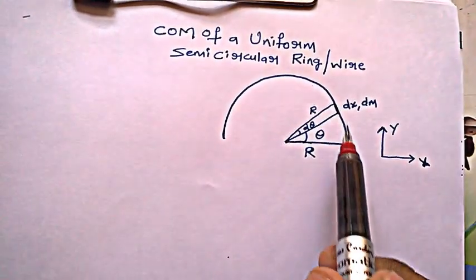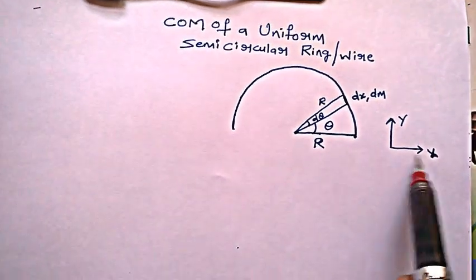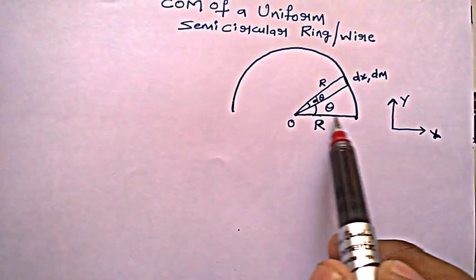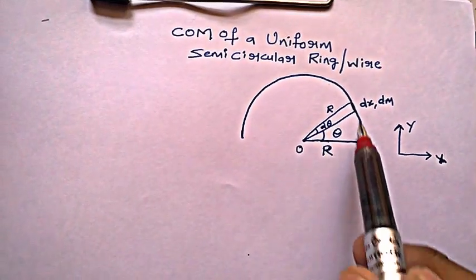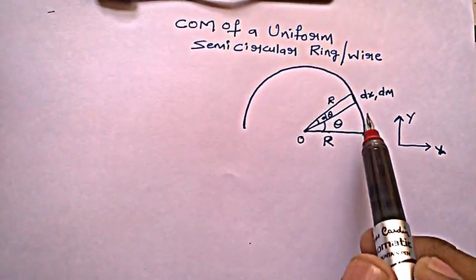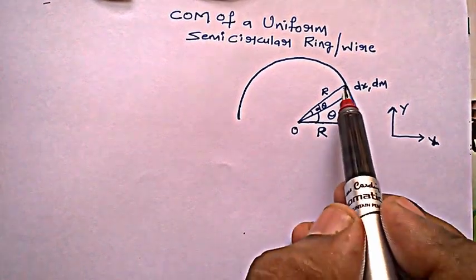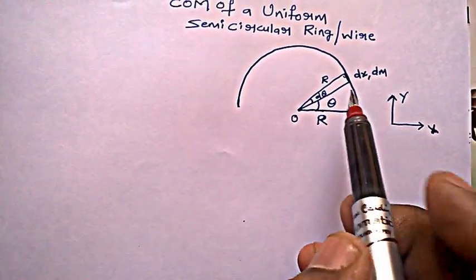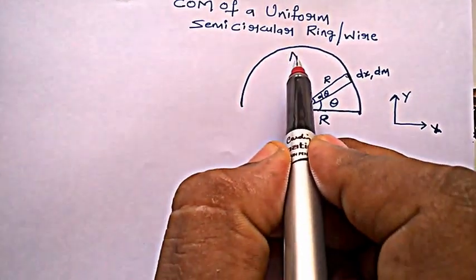So the scenario is already drawn here. I have chosen x and y axis and this is my origin. The radius of the wire or ring of the semicircular form is R. I have chosen the elemental length dx having mass dm. Let the mass of the entire wire be M.